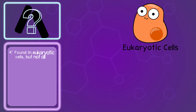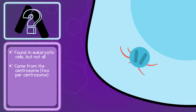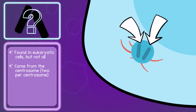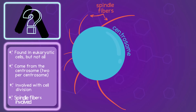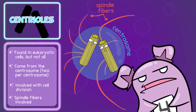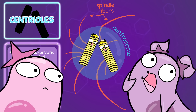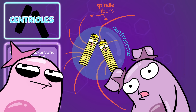These are in eukaryotic cells, but not all eukaryotic cells — for example, in animal cells, but not plant cells. These come from the centrosome. There are two of these per centrosome, and they're involved with cell division. The spindle fibers mentioned in our mitosis video are definitely involved with these. They are centrioles! 4 out of 10. Pulling chromosomes around is kind of rude. I do like that they remind me of tamales, or maybe churros. Man, I'm hungry.